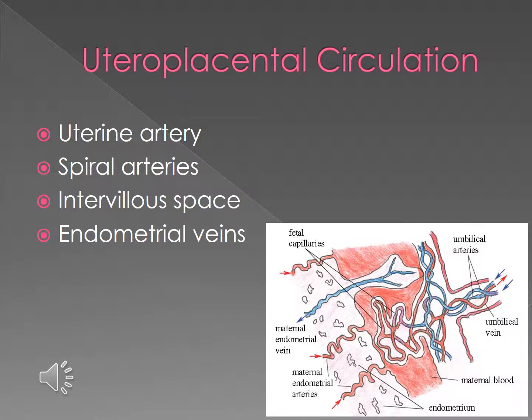Uteroplacental flow increases during gestation in three phases as a result of vasodilation. The first occurs within days or weeks of pregnancy. The second occurs with the development of the intravillus spaces. The third is during rapid fetal growth after 30 weeks, which corresponds with the change in uterine blood flow.